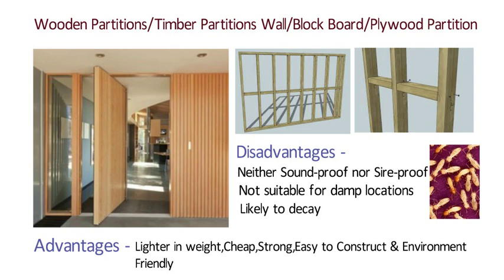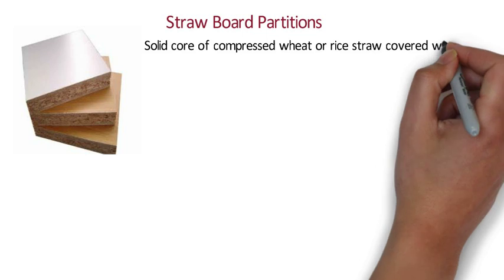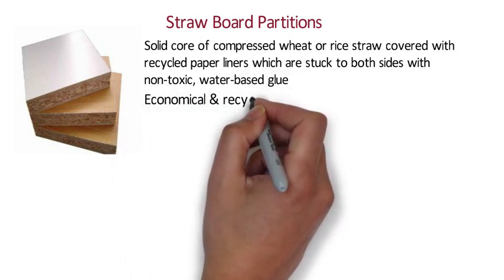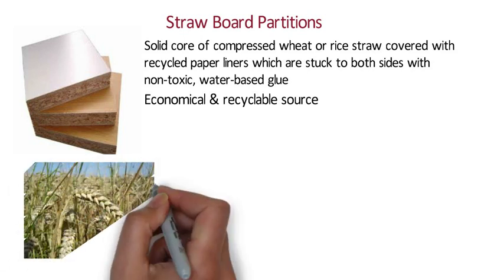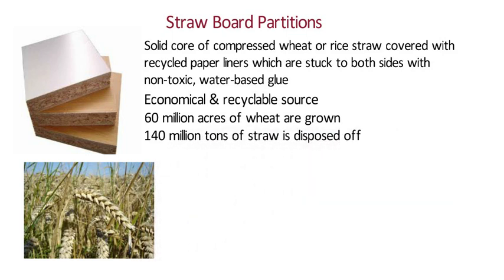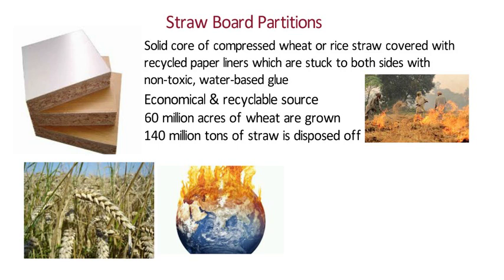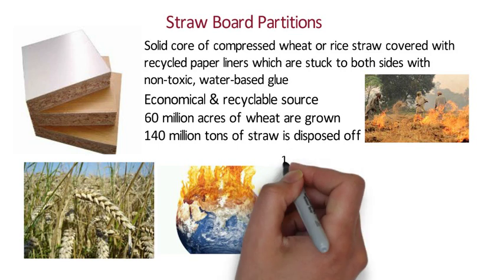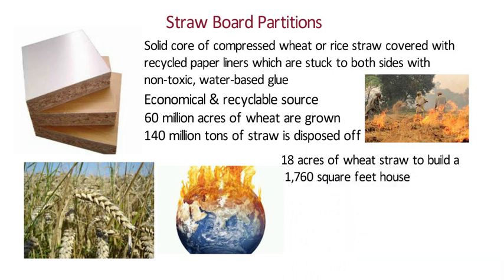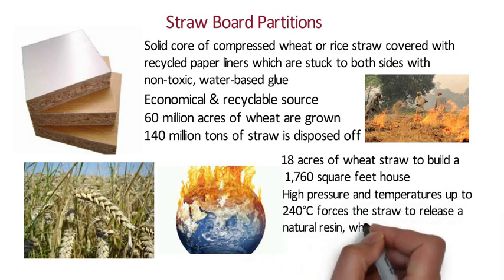Nowadays the use of timber partition walls is decreasing. Strawboard Partitions: A strawboard panel is made of a solid core of compressed wheat or rice straw covered with recycled paper liners stuck to both sides with non-toxic water-based glue. Strawboard is an economical and recyclable resource — the straw left over as a by-product of harvesting wheat grain. In the United States alone, 60 million acres of wheat are grown each year, resulting in 140 million tons of straw mostly disposed of by open-air burning, which adds to global warming and creates severe seasonal air quality problems.